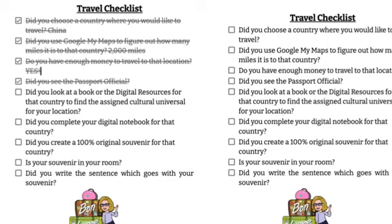Now you're ready. Use a book or one of the digital resources for China and look for the assigned culture universal for the continent of Asia, which I believe is material goods — but check the resource rather than going from memory. Then get ready to start working on your digital notebook, which is next.